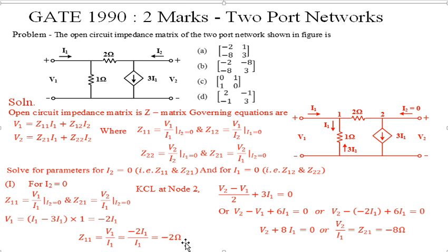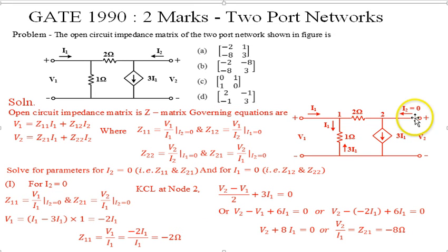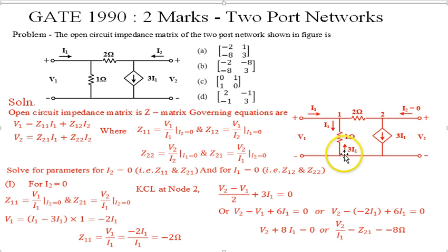Therefore Z11 = V1/I1 = minus 2I1 / I1 = minus 2 ohms. Next, we find Z21 by applying KCL at node 2 with I2 = 0.